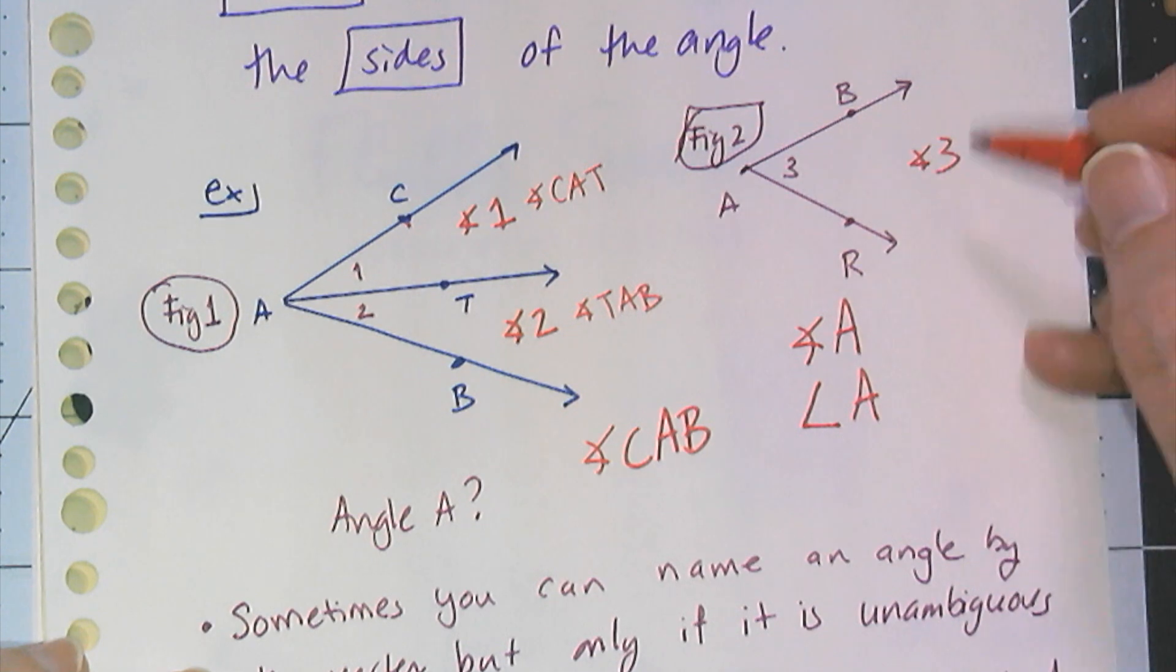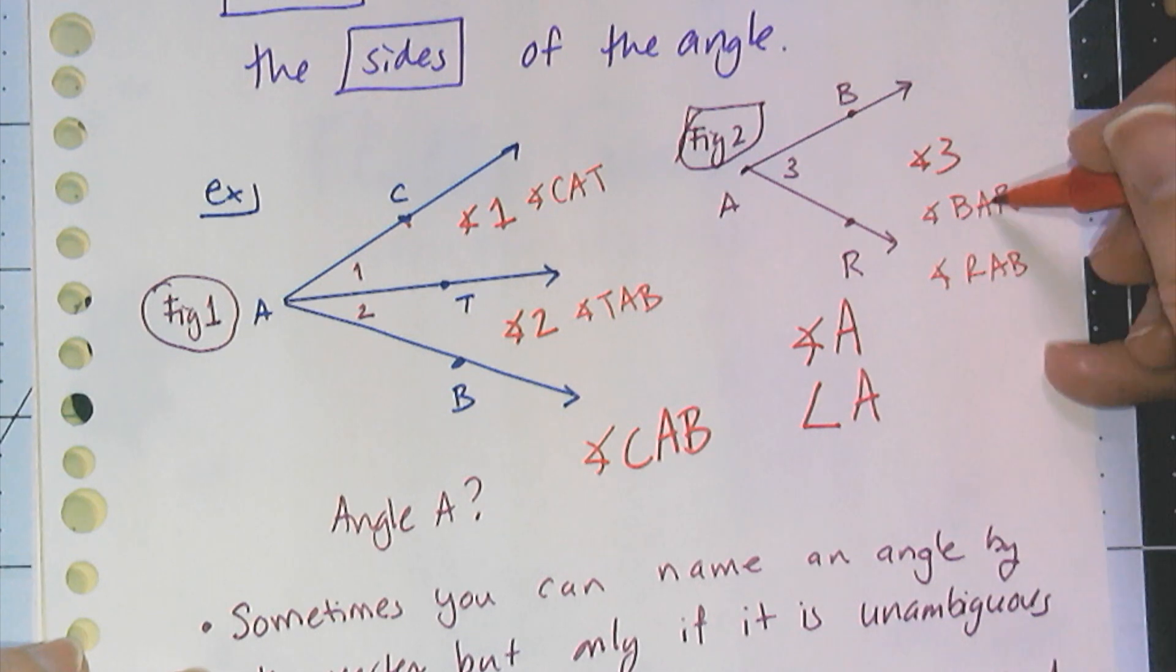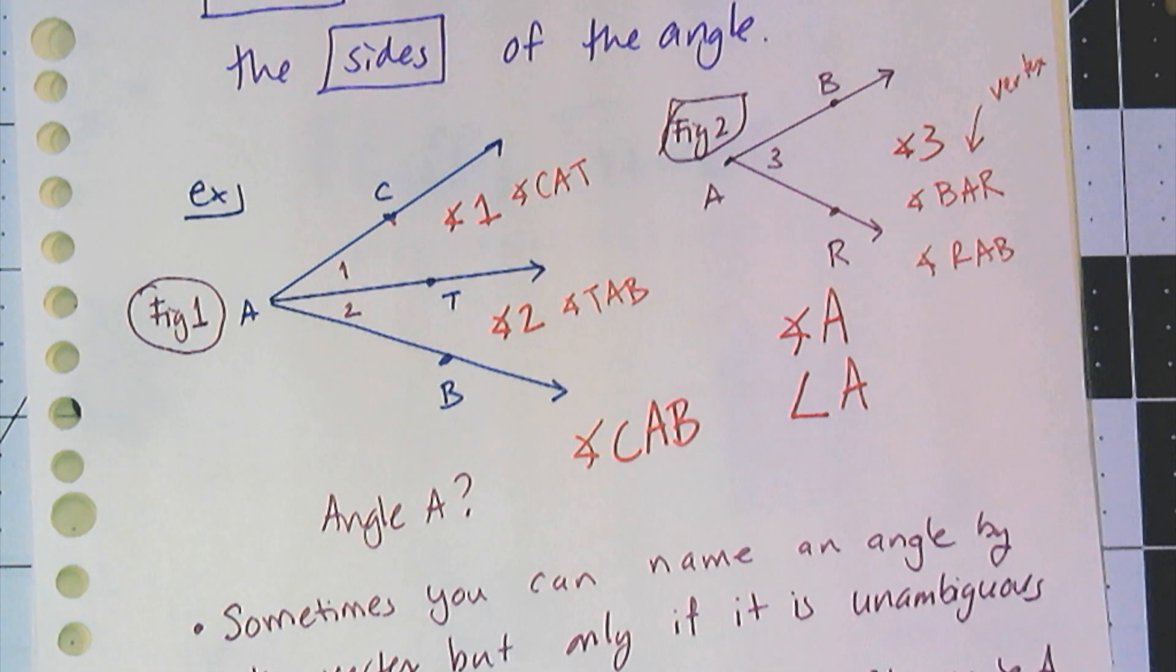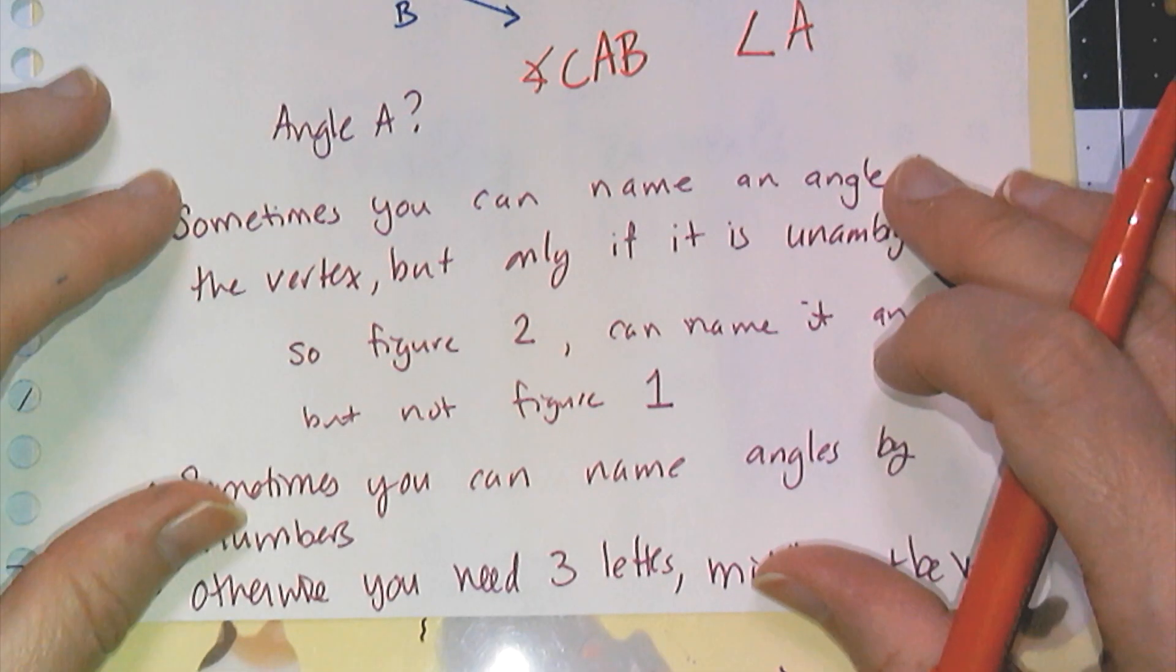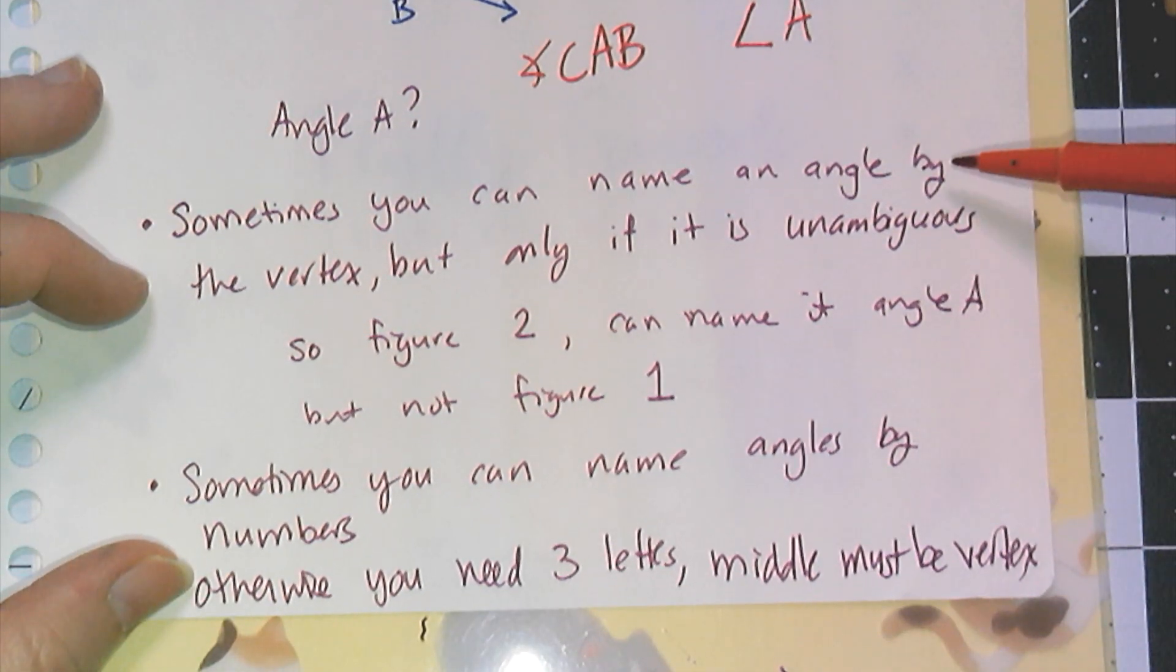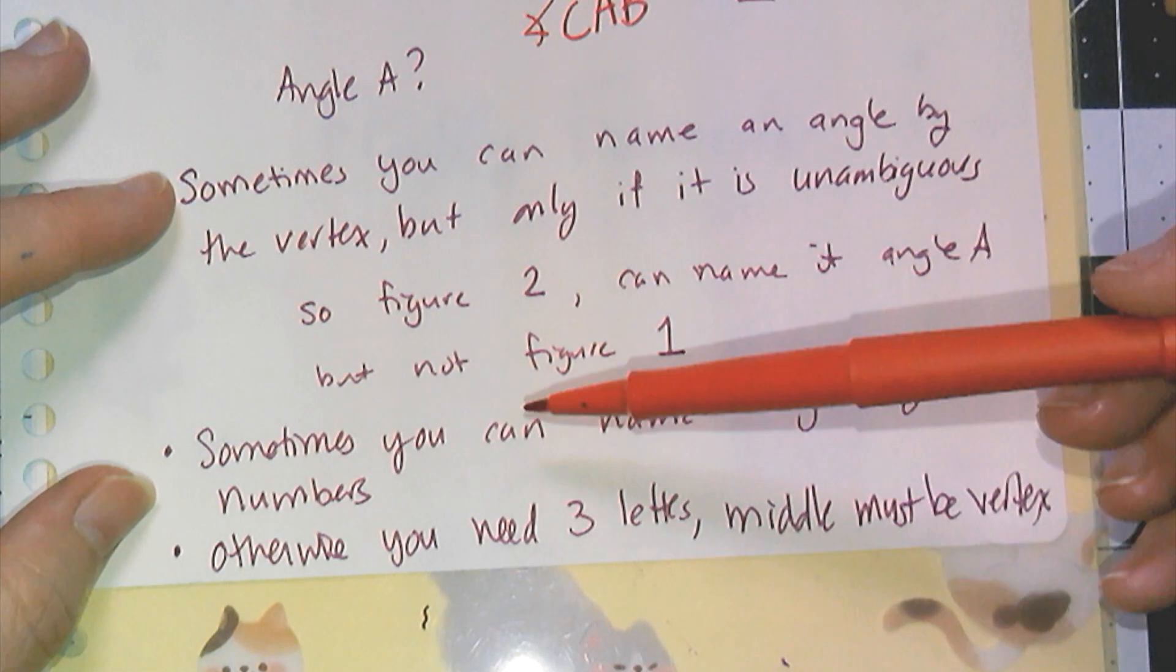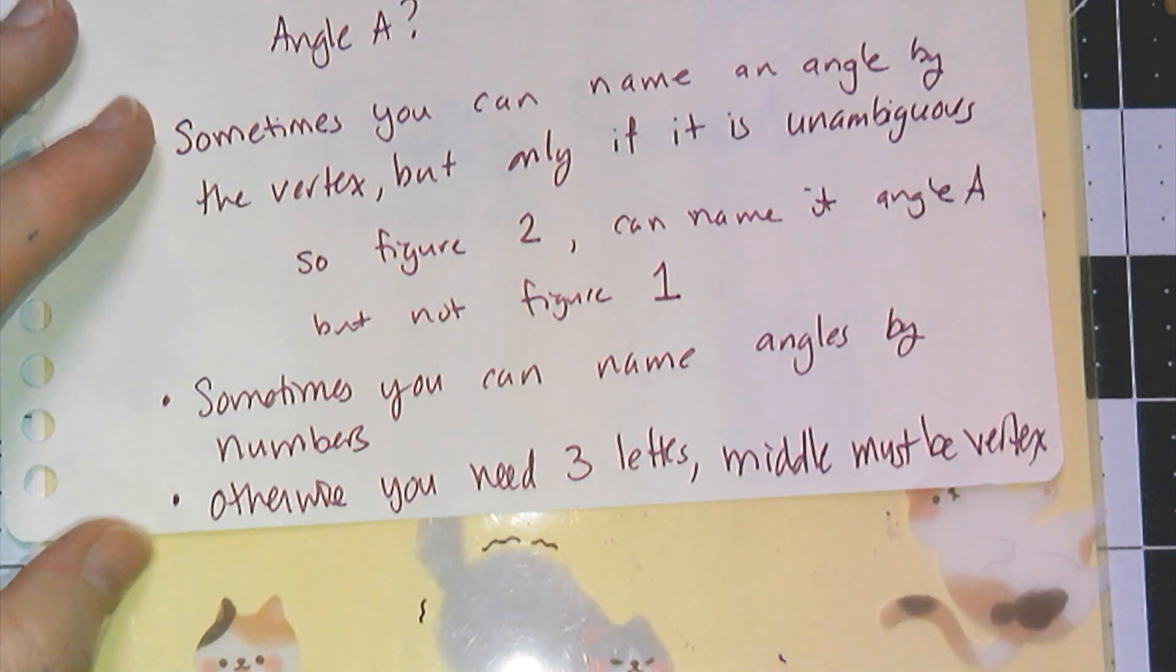And the alternate way of naming this angle is calling it angle BAT. Now I can go in reverse too. I can also say angle TAB. But the key is the vertex has to be the middle letter. That's the naming convention. So if I tell you to draw angle DOG, O would be the vertex. The name tells you what the vertex is. So I have those naming conventions written down. Sometimes I can name an angle by the vertex only, only if it's unambiguous. Sometimes you can name angles by numbers if the numbers are drawn in there. Otherwise, we use three letters where the middle letter has to be the vertex.